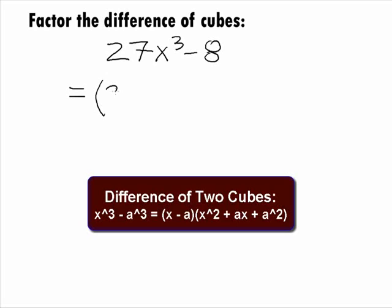Rewriting our binomial so you can see how it fits this form, we can rewrite 27x cubed with a base of 3x being cubed and 8 as a base of 2 being cubed.